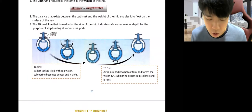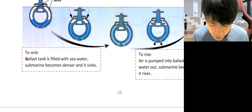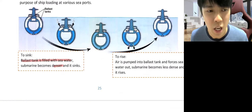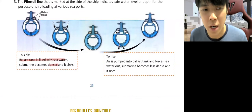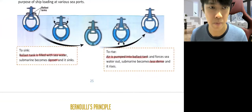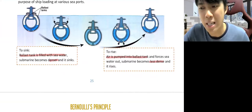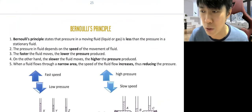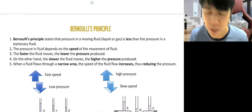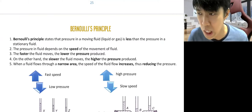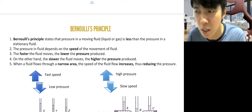Finally, how a submarine works: to go down, the ballast tank is filled with water, making the submarine denser and it sinks. To rise back up, air is pumped into the ballast tank, replacing the water, making it less dense, and it rises. We still have Bernoulli's principle as a final topic — we'll cover that next week together with chapter six, since that chapter is shorter. We'll continue with the new book next week.